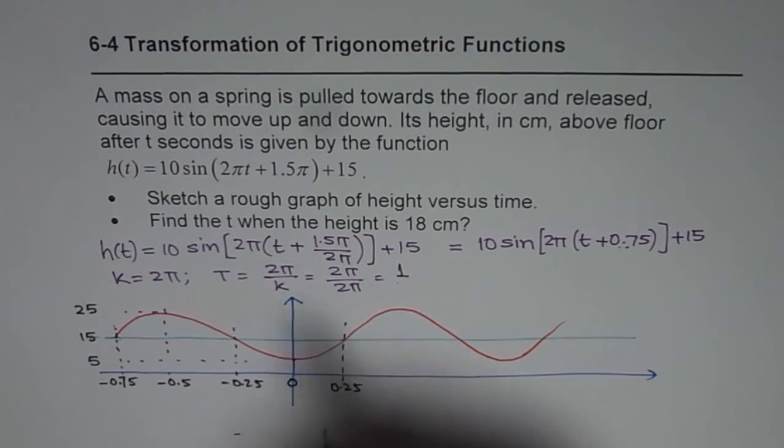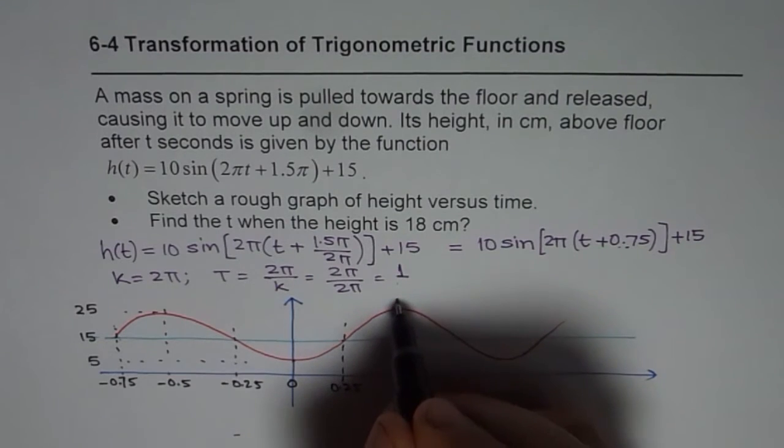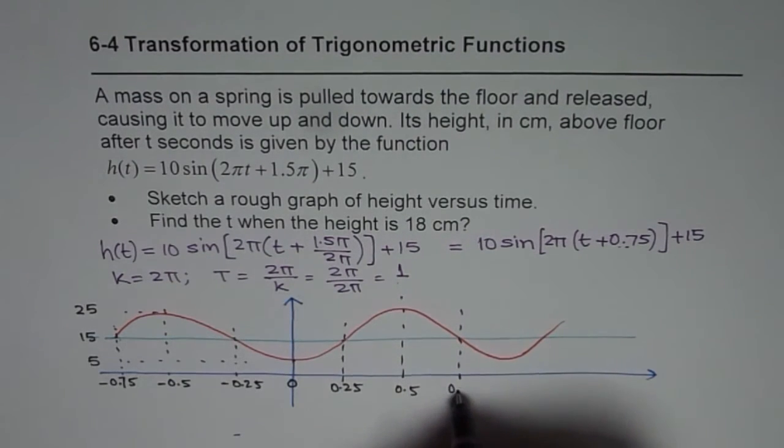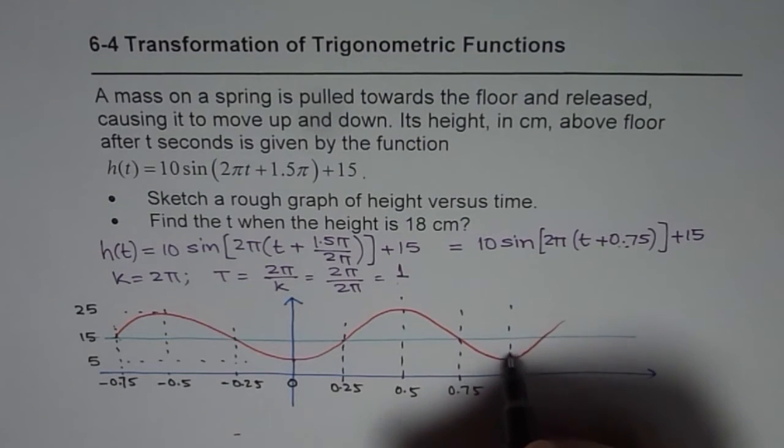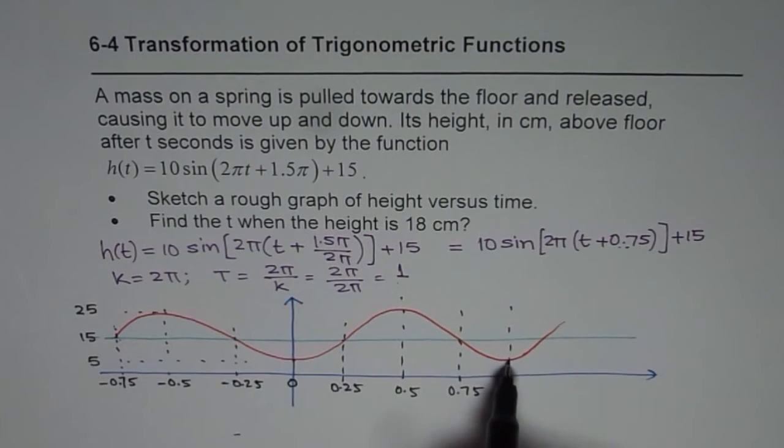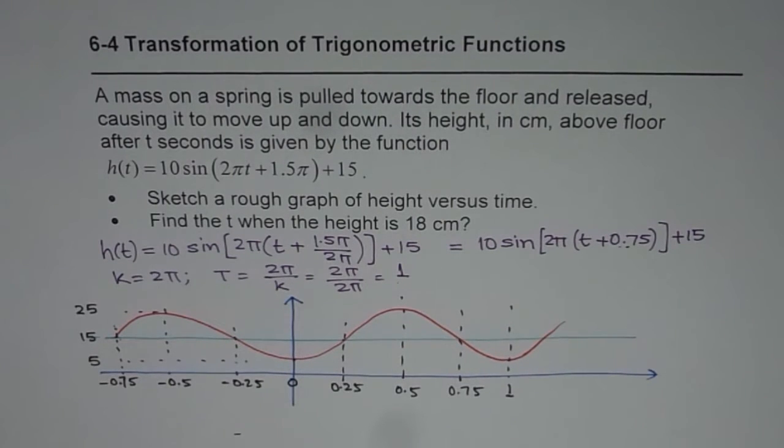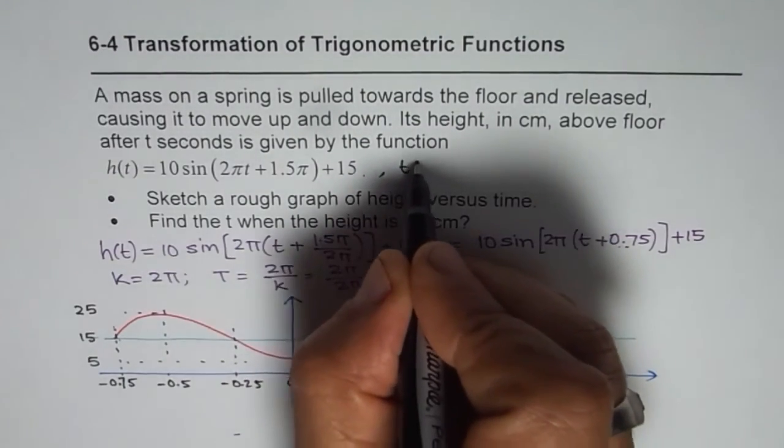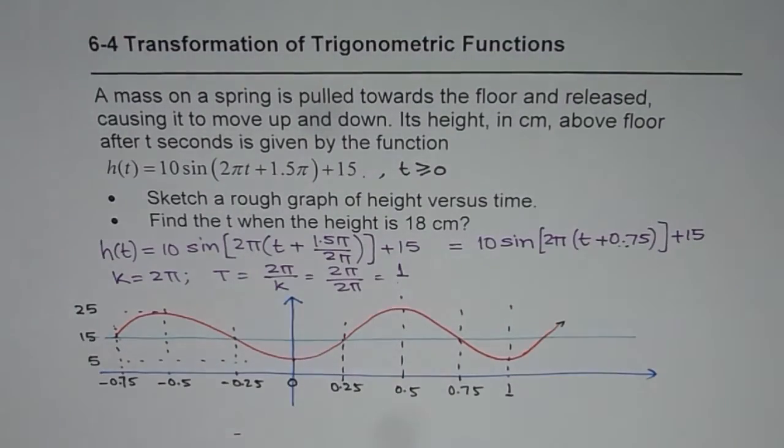So this is the 0. Here if you see, each quarter is - so this is 0.5 for us. This is 0.75. And this is 1 more. So this is 1. So from 0 to 1, we have 1 cycle. And the cycle repeats. Since it is time after the spring is pulled, T should be actually greater than or equal to 0. So that is a restriction. T cannot be negative for us. So we are actually interested in this part of the graph.